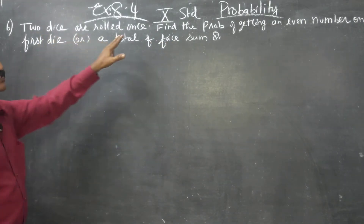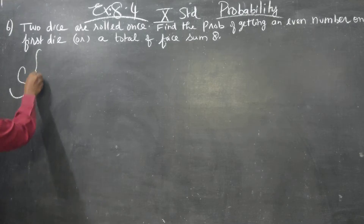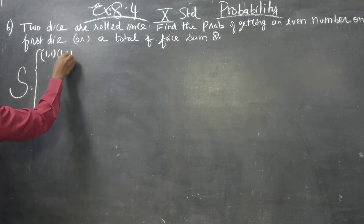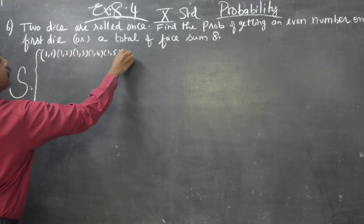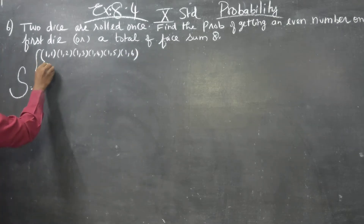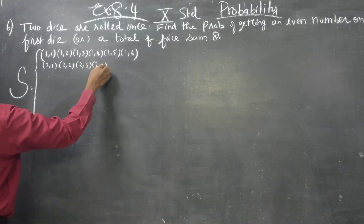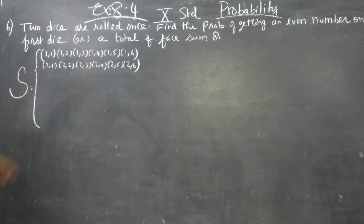First of all, two dice are rolled. You have to write the sample space. S is equal to: 1,1  1,2  1,3  1,4  1,5  1,6  2,1  2,2  2,3  2,4  2,5  2,6 — and likewise you have to write up to 6,6.